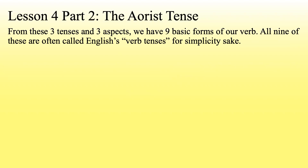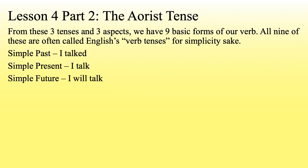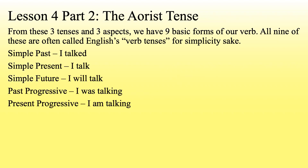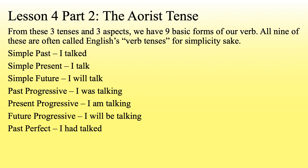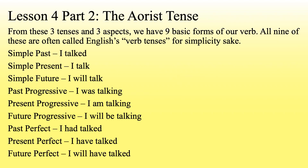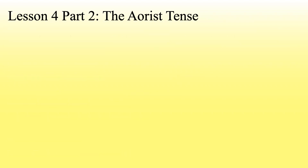From these three tenses and three aspects we get nine basic verb forms, often called English's verb tenses for simplicity's sake. Simple past: I talked. Simple present: I talk. Simple future: I will talk. Past progressive: I was talking. Present progressive: I am talking. Future progressive: I will be talking. Past perfect: I had talked. Present perfect: I have talked. And future perfect: I will have talked.